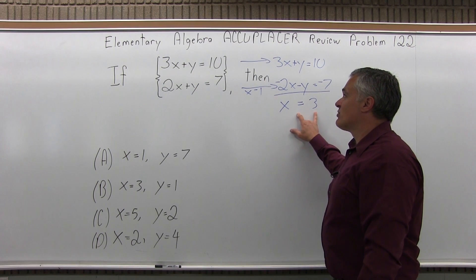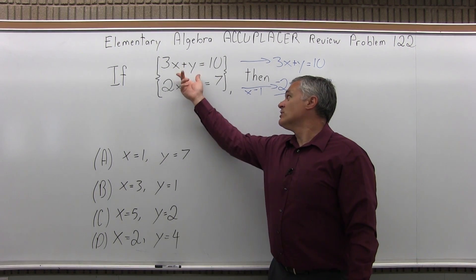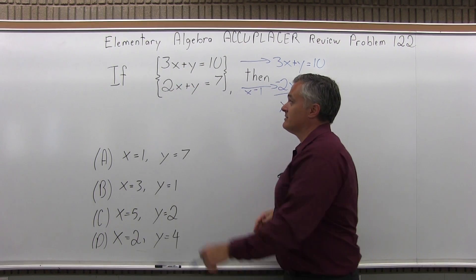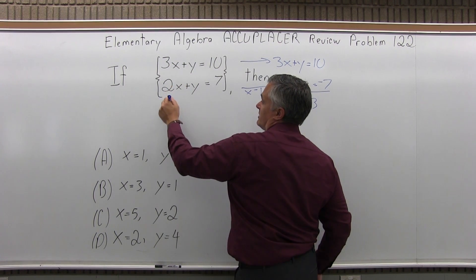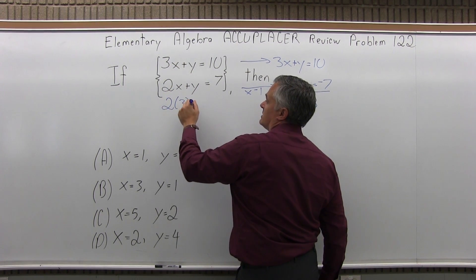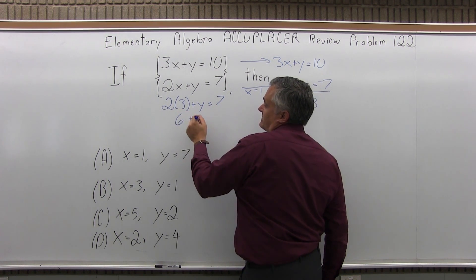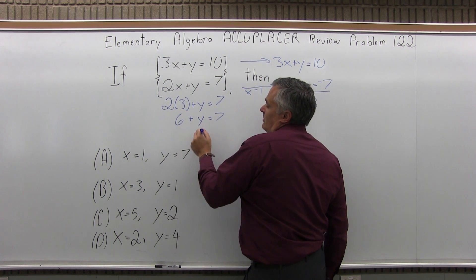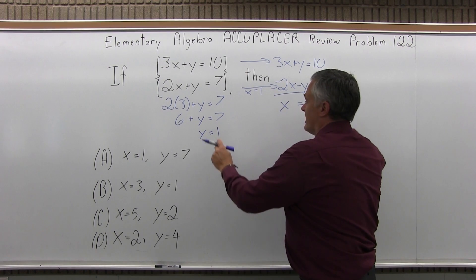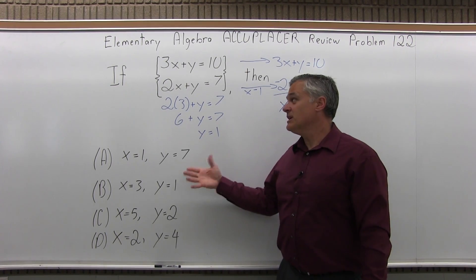Now that I have x is 3, I can go back to either of the original equations and find y. I'll just take the bottom one, 2 times x becomes 2 times 3 plus y equals 7. 6 plus something is 7, well, y must be 1. So I have x is 3, y is 1, which still brings me to option B.